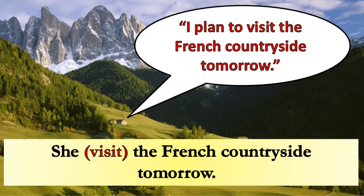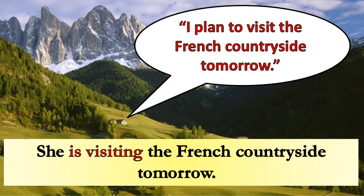I plan to visit the French countryside tomorrow. She visit the French countryside tomorrow. This is a future plan, so we should use the present continuous. The correct answer is: She is visiting the French countryside tomorrow.